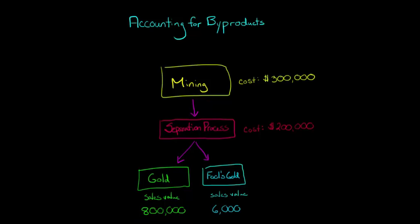But in addition to that gold you get some fool's gold. And let's say that fool's gold is worthless but you have this friend of yours who collects fool's gold and so you can sell this fool's gold as much as you get to your friend. Now your friend doesn't have a lot of money so the sales value of that fool's gold is just $6,000 but hey, you'll take the $6,000.